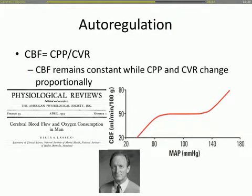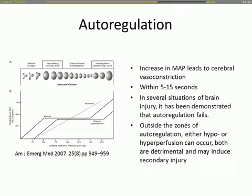We now come to the concept of auto-regulation, which has been a key insight in ICP curve interpretation over the past decade. Auto-regulation is the capacity to keep cerebral blood flow constant within certain ranges of blood pressure. Vessels constrict until they decompensate, leading to passive vasodilation, or when blood flow is too low, hypoperfusion results. Auto-regulation occurs within 5 to 15 seconds and has been shown to fail in traumatic brain injury, ischemic brain injury, and subarachnoid hemorrhage.